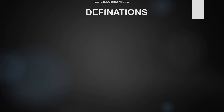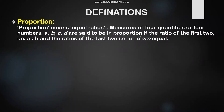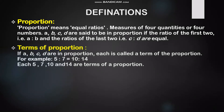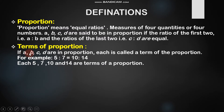Now let's look at some important definitions. Proportion means equal ratio — a measure of four quantities. A, B, C, D are said to be in proportion if the ratio of the first two, A ratio B, and the ratio of the last two, C ratio D, are equal. A, B, C, D are the terms of proportion. For example, in 5 ratio 7 proportional to 10 ratio 14, the numbers 5, 7, 10, and 14 are the terms of proportion.